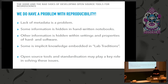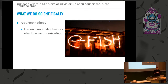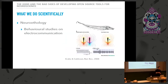Before I go into our open source tool development, I want to talk a little bit about what we do scientifically. I'm from the Department of Neurobiology, and more specifically we are neuroethologists — we intend to understand how the brain processes information in the context of the animal's own behavior. Our favorite study system is the electric fish. These creatures produce an electric field that surrounds themselves, and they use it for prey detection, navigation, as well as communication.